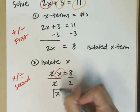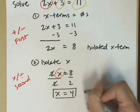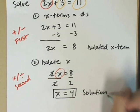Now that I've got x isolated, I have my answer. x equals 4 is my solution.